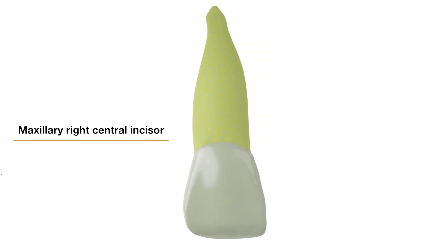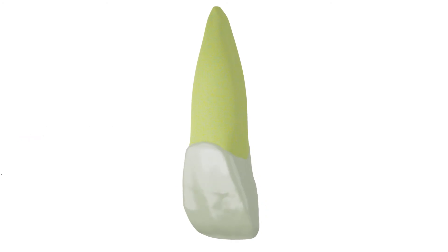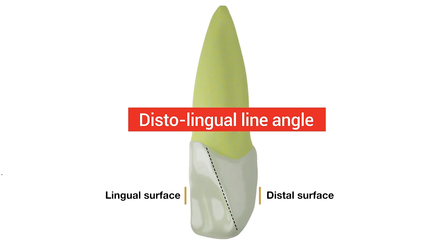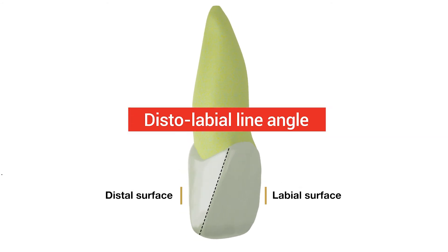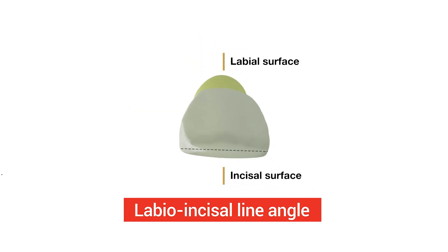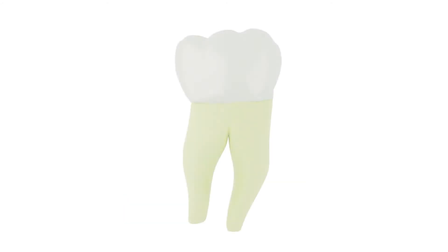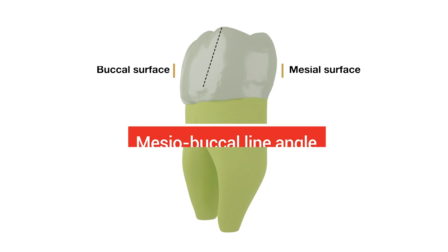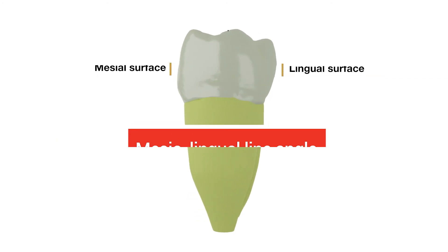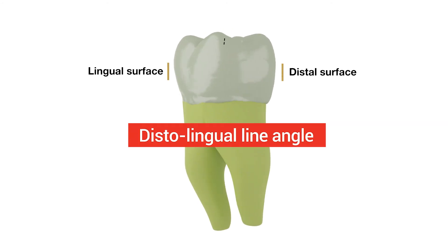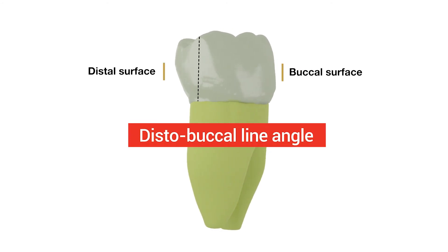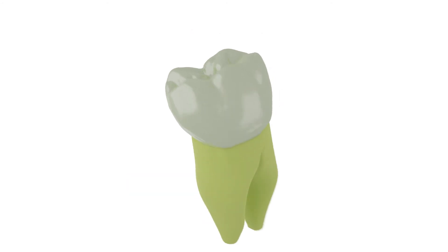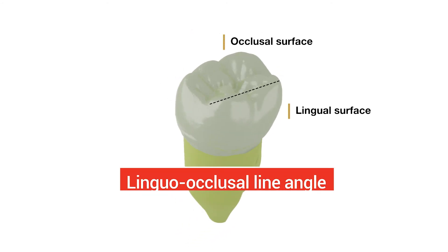The line angles of the anterior teeth are six in number: Mesolabial, Mesolingual, Distolingual, Distolabial, Labioincisal, and Linguoincisal. The line angles of the posterior teeth are eight in number: Mesiobuccal, Mesiolingual, Distolingual, Distobuccal, Distoocclusal, Buccoocclusal, Mesiocclusal, and Linguoocclusal.